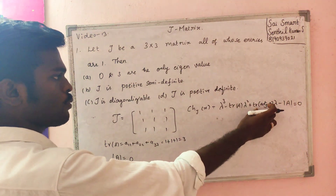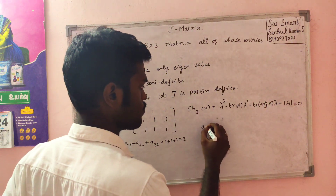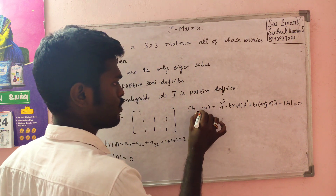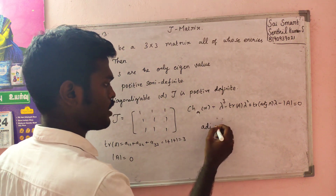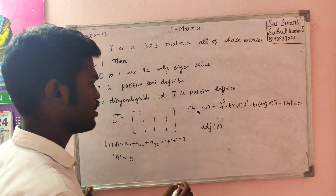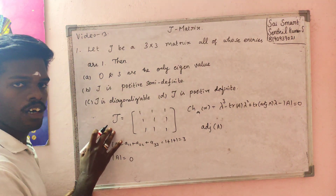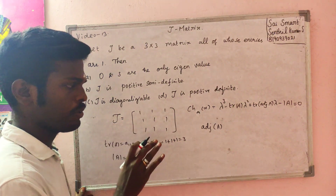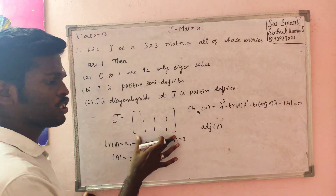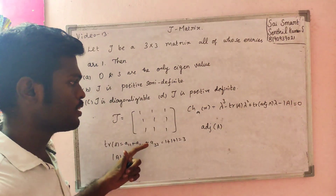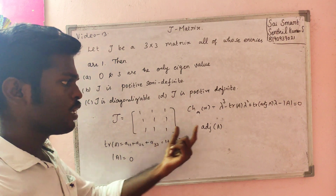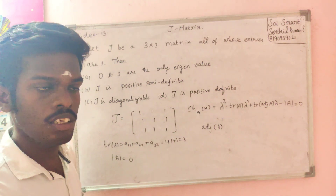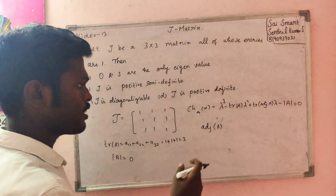So, trace of adjoint of A. If you name the adjoint of A — adjoint of A means the trace of adjoint of A. You have to compute the adjoint of A. The specialization is J-matrix.